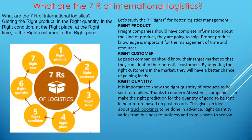First: Right Product. Freight companies — such as air transporters, shipping lines, airlines, and other logistics companies — should have complete information about the kind of product they are going to ship. Proper product knowledge is important for the management of time and resources. For example, if goods are perishable and you do not maintain the temperature of the transport vehicle, the goods will spoil. You need to select the right product — one you can efficiently transport — and if you are not equipped for handling perishable goods, you need to avoid them.